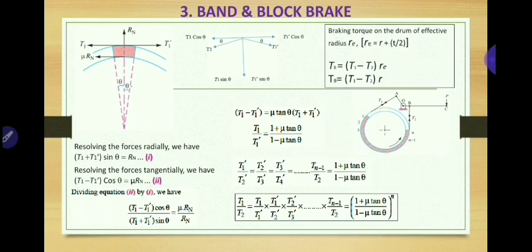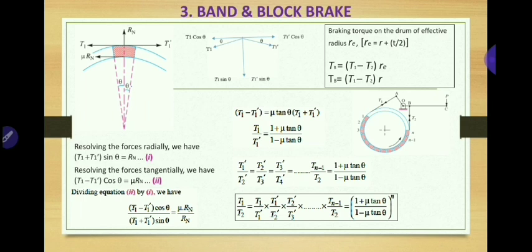With this ratio and the braking torque formula TB = (T1 - T2) × RE, once you find T1 and T2 from the tight side and slack side forces, you can calculate TB. If the thickness of the band T is not given in the problem, the effective radius RE is taken as equal to R, the radius of the wheel, and the braking torque formula becomes TB = (T1 - T2) × R. Remember the two key equations: T1/T2 = [(1 + μ tan θ)/(1 - μ tan θ)]^n and TB = (T1 - T2) × RE where RE = R + T/2.